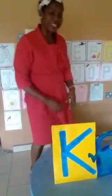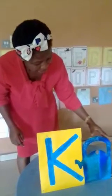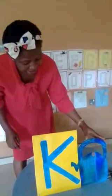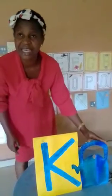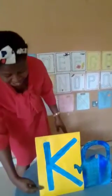We have objects that begin with letter K. Let's look at this one. This one is Kettle. Kettle. K as in Kettle.